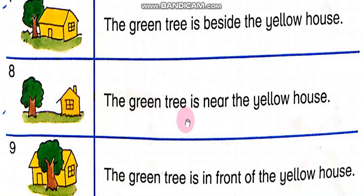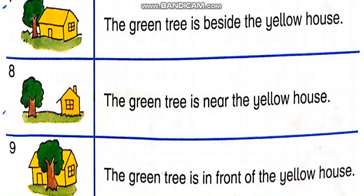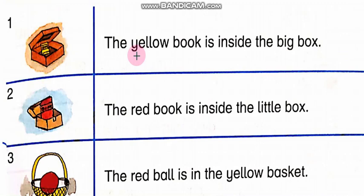In the ninth picture: The green tree is in front of the yellow house. Yellow house ke bilkul saamne green tree hai. In front of mean saamne — bilkul front mein ho.